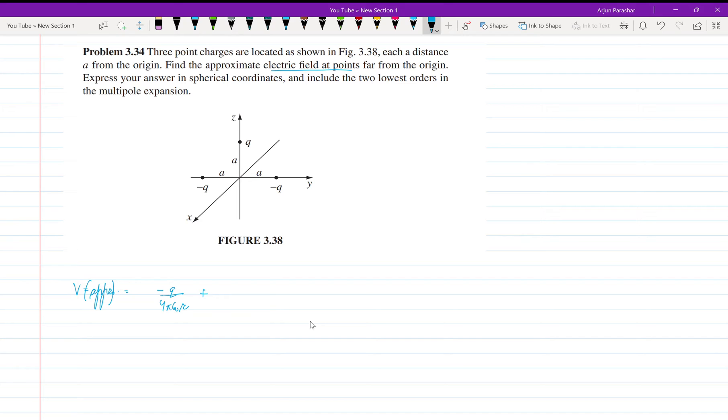Plus the dipole term. The monopole potential, then for the dipole, the potential is P cos theta upon 4 pi epsilon naught R squared. This is the potential that we'll be using.